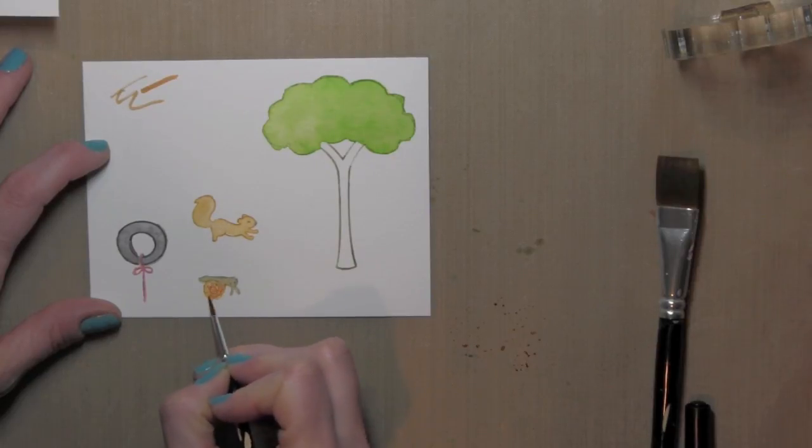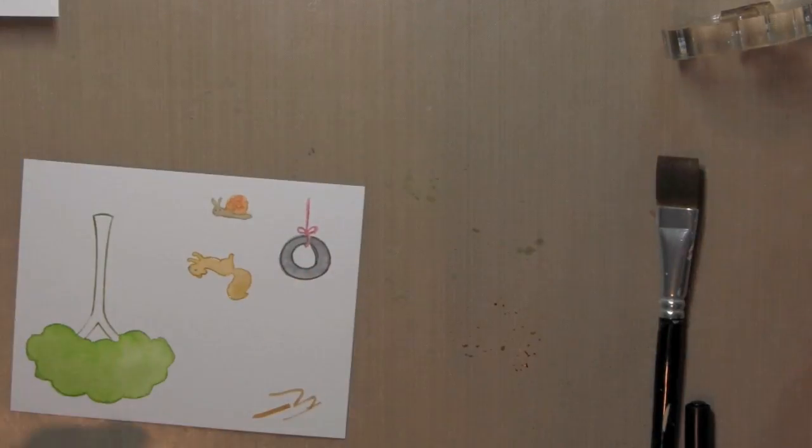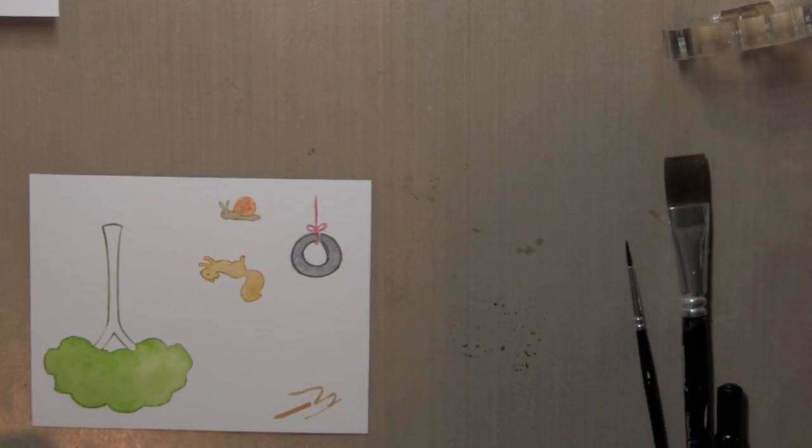Here's that ripe persimmon that I dotted in there and then just kind of blended it in, and I like how it really darkened up the snail.